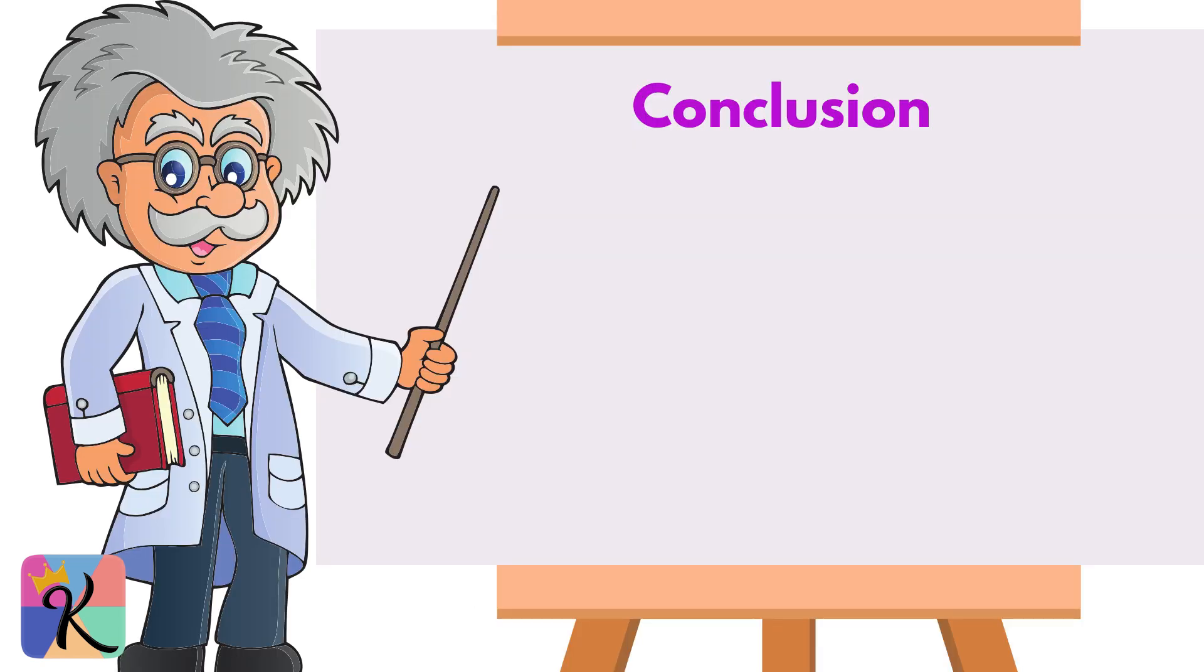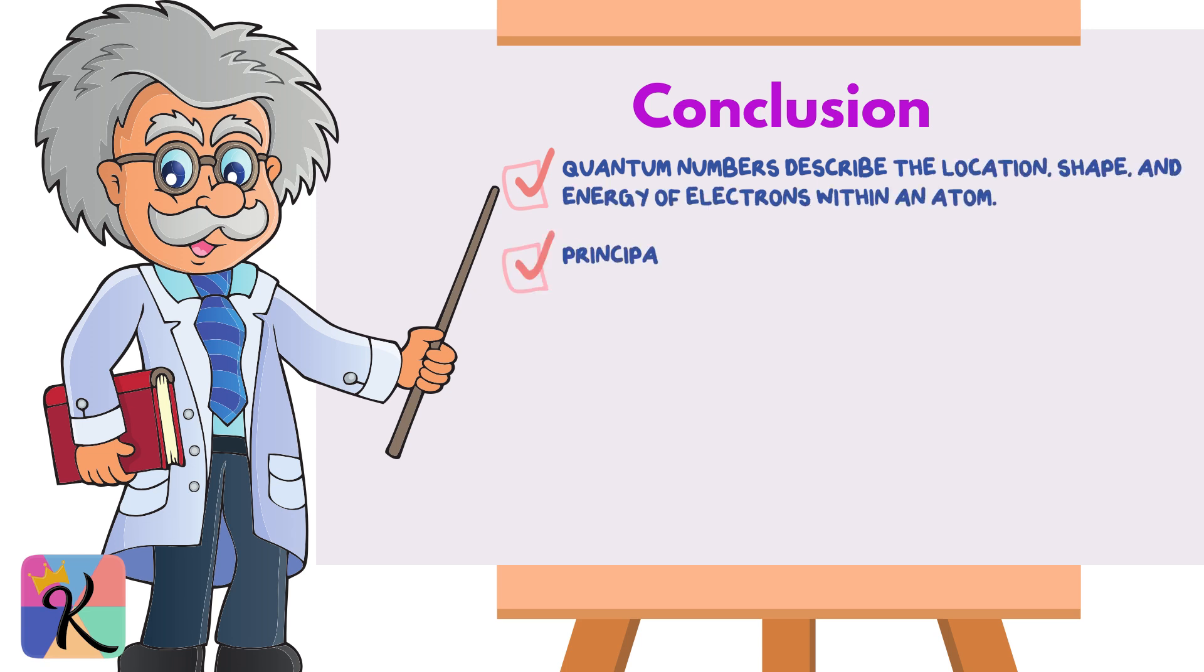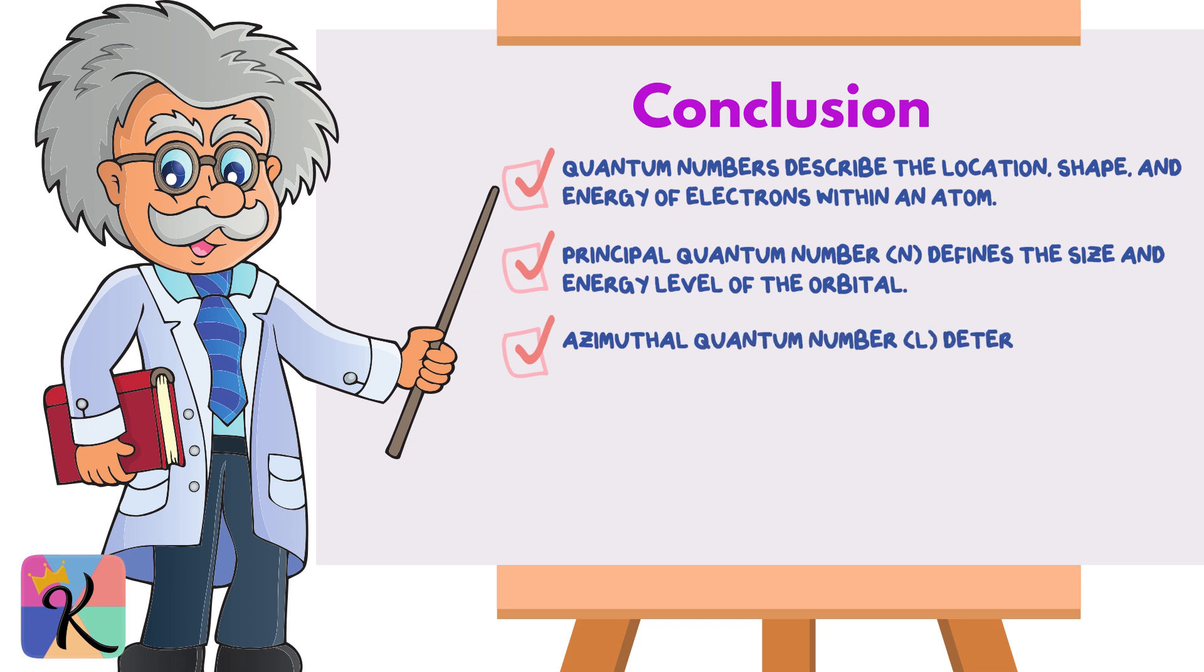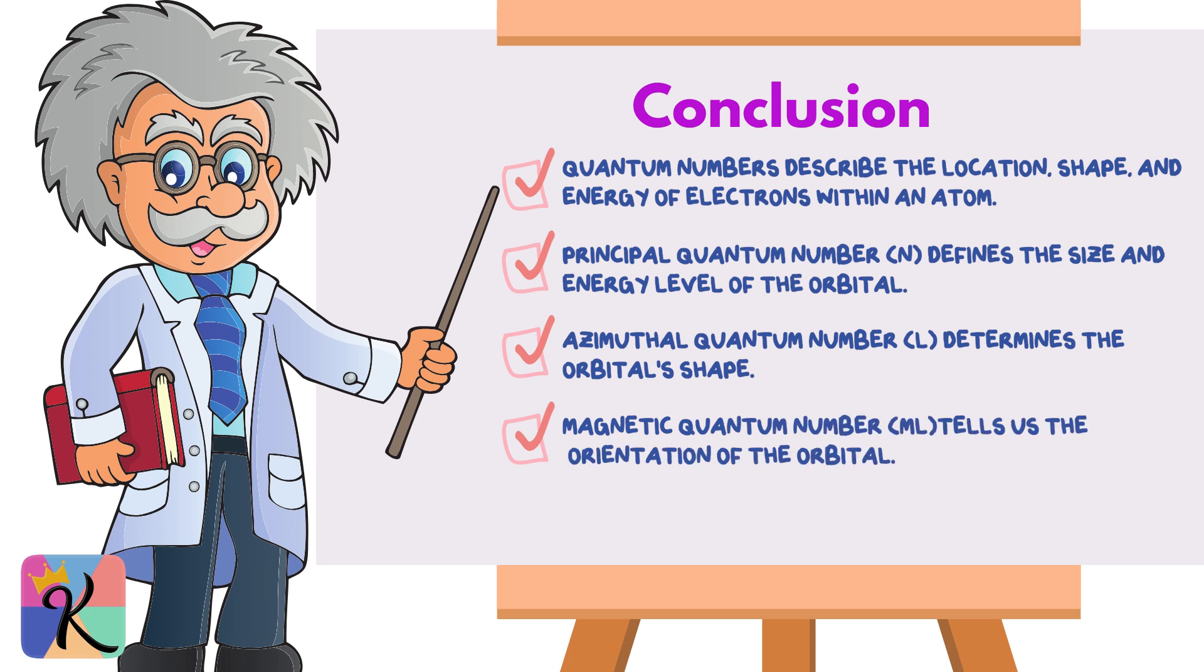Let's recap what we've covered. Quantum numbers describe the location, shape, and energy of electrons within an atom. The principal quantum number (n) defines the size and energy level of the orbital. The azimuthal quantum number (l) determines the orbital's shape. The magnetic quantum number (ml) tells us the orientation of the orbital. The spin quantum number (ms) describes the electron's spin. These quantum numbers help us predict atomic orbital overlap in bond formation, crucial for understanding molecular structure.